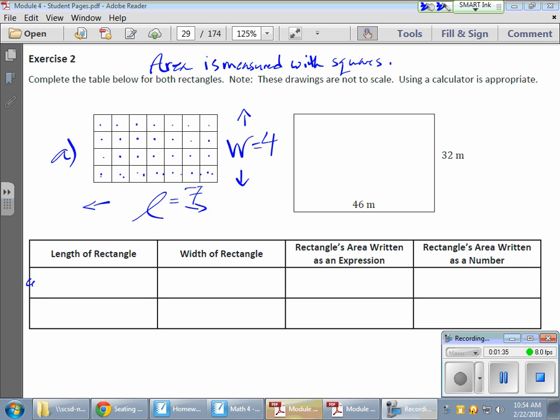The length of this first rectangle—let me label it rectangle A—would be my 7. I don't have a particular unit so I'll just write units. The width would be 4 units. Written as an expression for the area, it's going to be length times width, which is 7 times 4. The area written as a number would be 28 units squared, or squared units, and there are 28 of them.